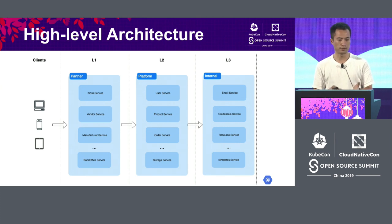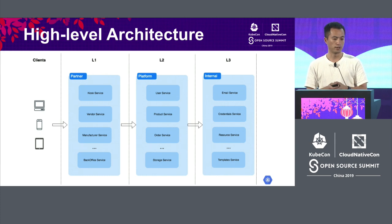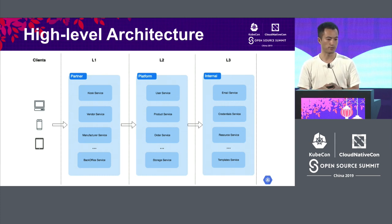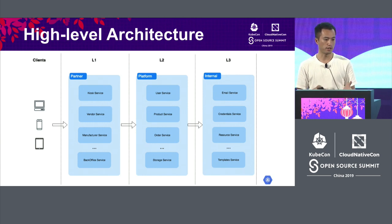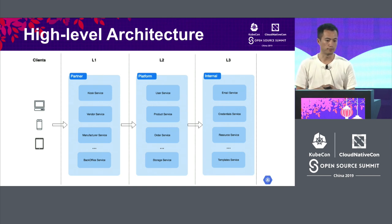So we divide these services into layers. We have layer one, which are our partner services, layer two, which are platform services, and layer three for internal services. On each layer, we apply a different authorization scheme.